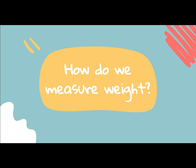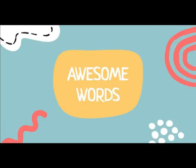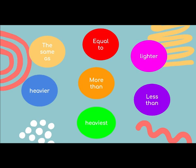But how do we measure weight? There are different instruments. We can measure weight using balances to compare the weight of different objects, like the kids were doing, or we can use scales of different sizes. There are some special words we are going to use when we talk about weight, such as: the same as, to indicate that the weight is similar in two objects; equal to — these are synonyms. We can say that objects or people are lighter than others, heavier than others, or that they weigh more or less than others.